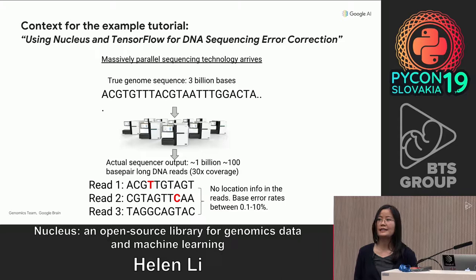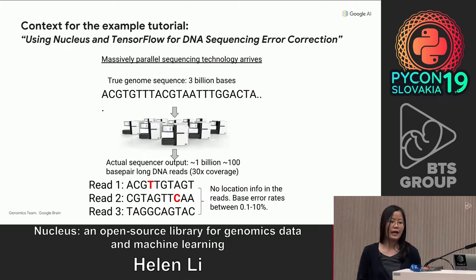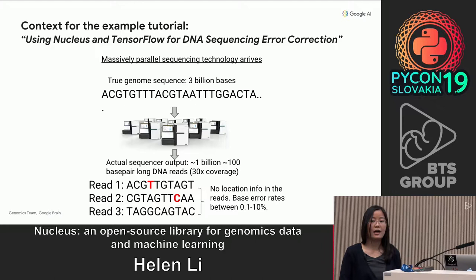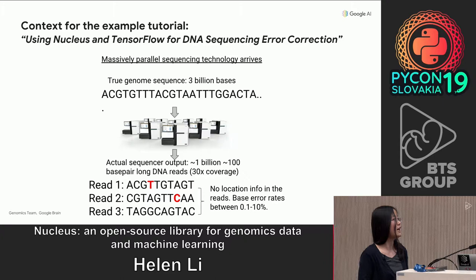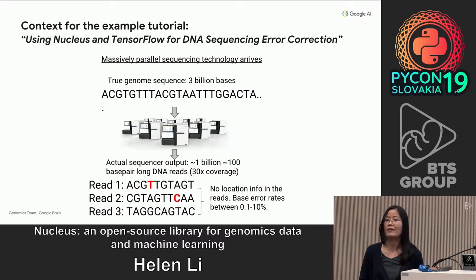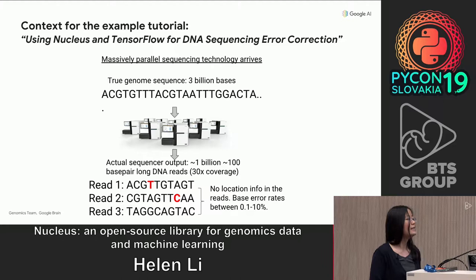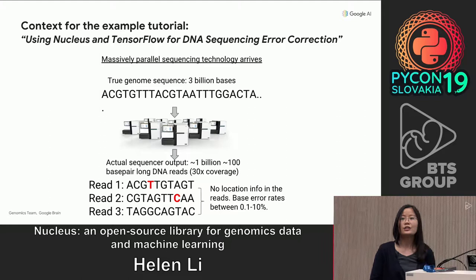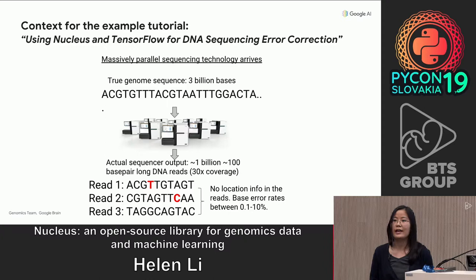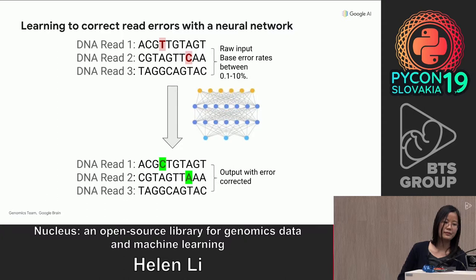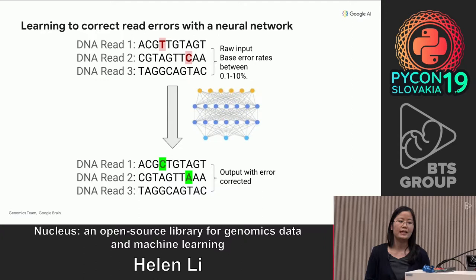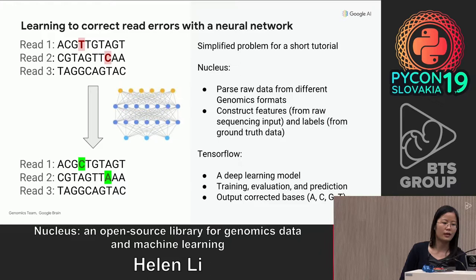Let me quickly go through the context for this tutorial. In the 2000s, next generation sequencing technologies arrived. This technology drastically reduced the cost to sequence a genome. However, this technology produces readings of the genome in chunks of roughly 100 bases long, and there are about 1 billion of these chunks. This is a great starting ground to apply deep learning, because we have a lot of raw data. Here you can see three examples of these chunks, reads 1 to 3, and the red letters in them are the errors produced by the sequencers. Depending on what sequencers you use, the error rate can be anywhere from 0.1% to 10%.